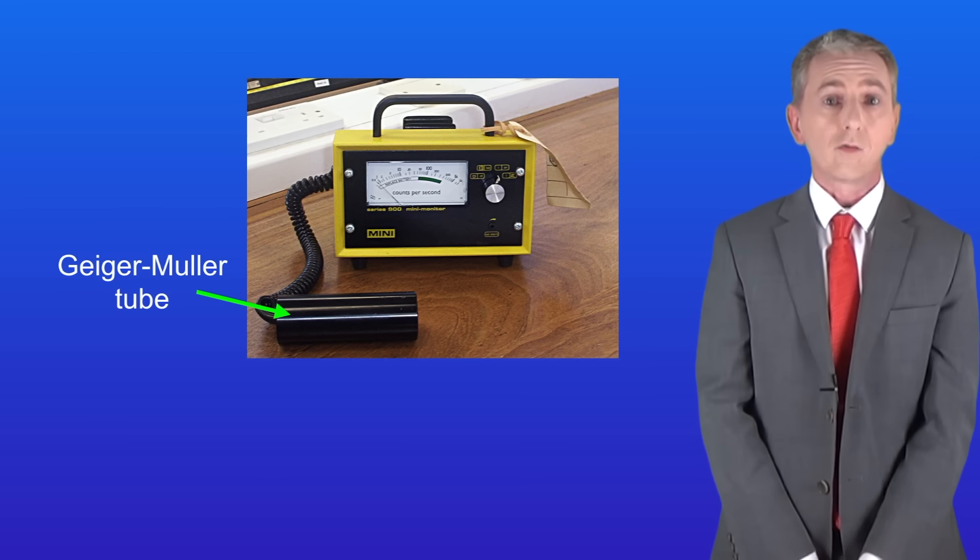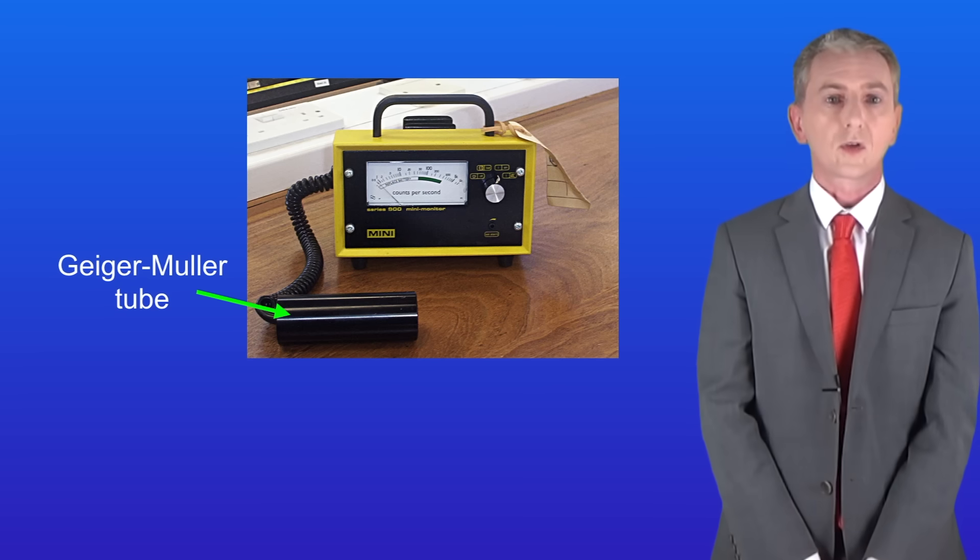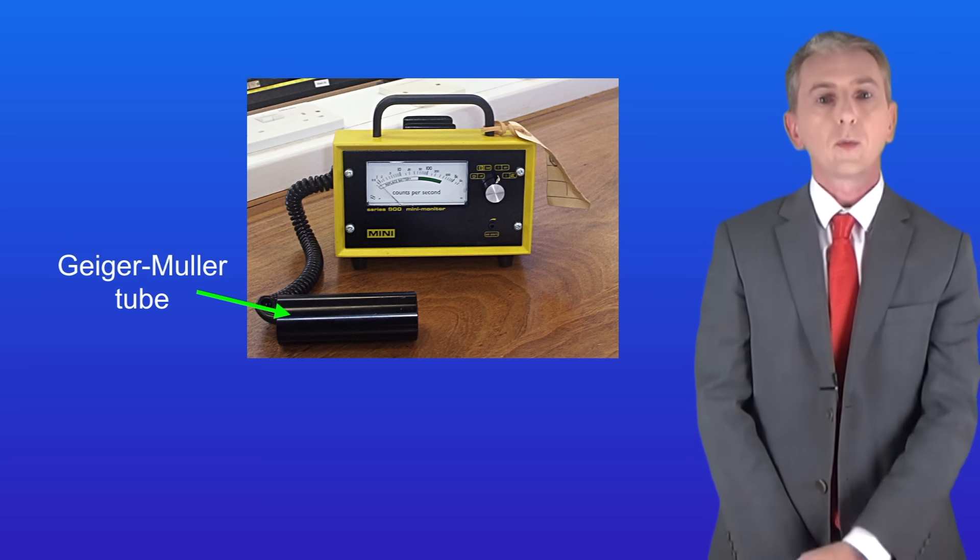To measure the activity of a radioactive source we can use a Geiger-Müller tube such as this one and you may have seen one of these in school.